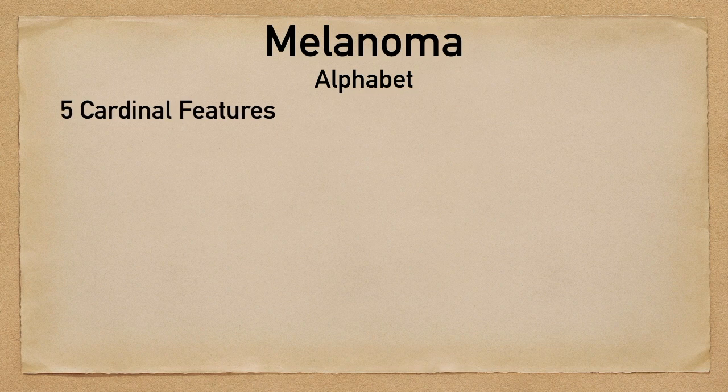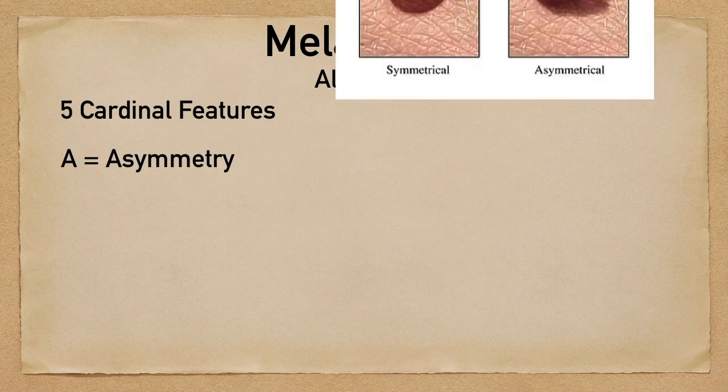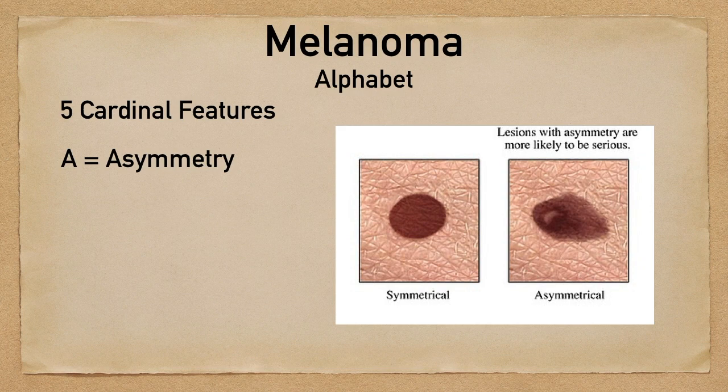These five cardinal features can be remembered using the alphabet method. Starting with A, that stands for asymmetry. Rather than having a nice lesion that's perfectly shaped or perfectly circular, there's going to be some asymmetry involved. Imagine drawing a line straight through the lesion and folding one end over the other. You can see on the image on the left that they would line up fairly well, but on the right there would be some asymmetry, and that could indicate melanoma.